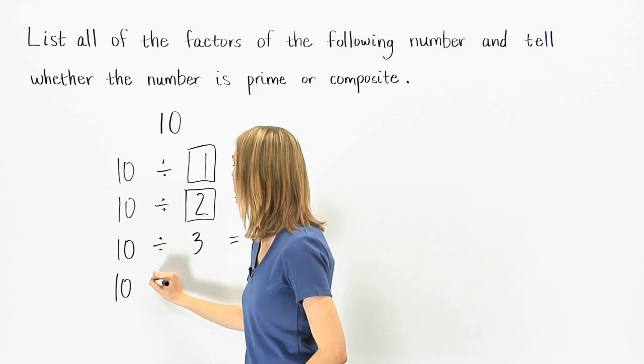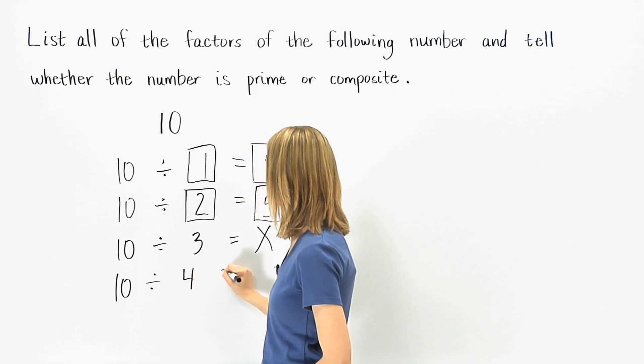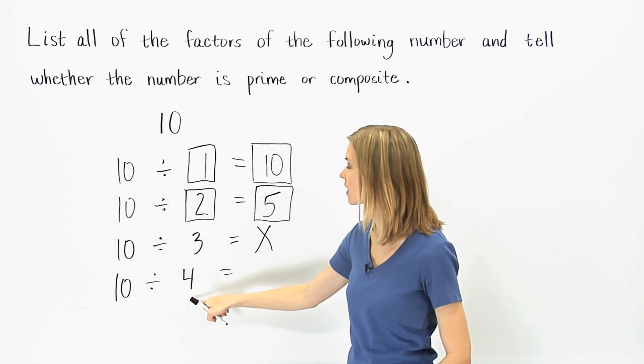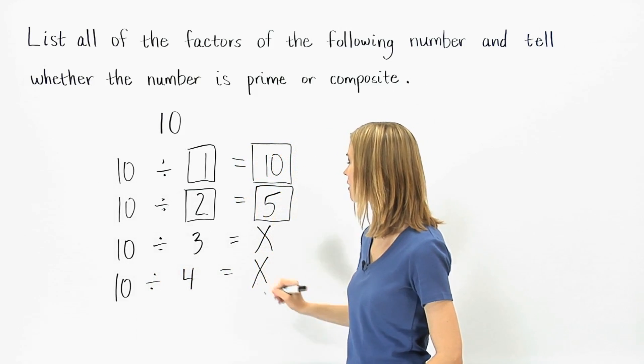Next, divide 10 by 4. Since 10 doesn't divide evenly by 4, 4 is not a factor.